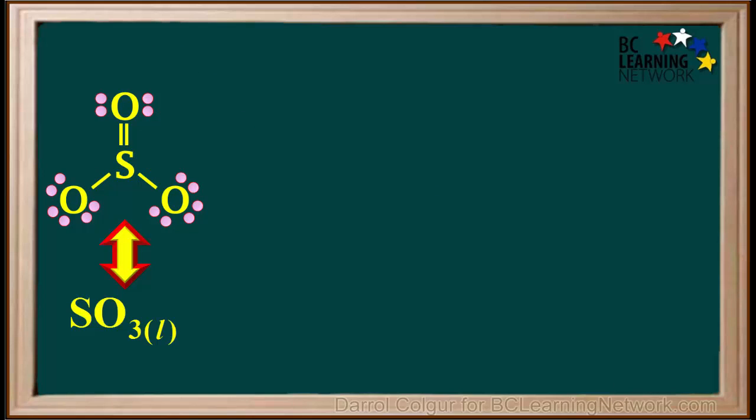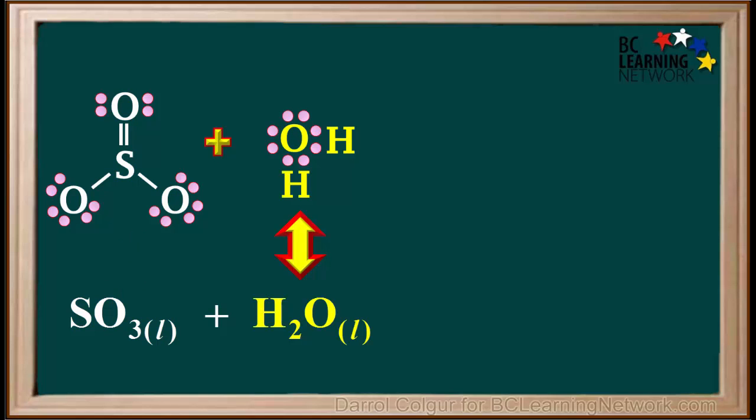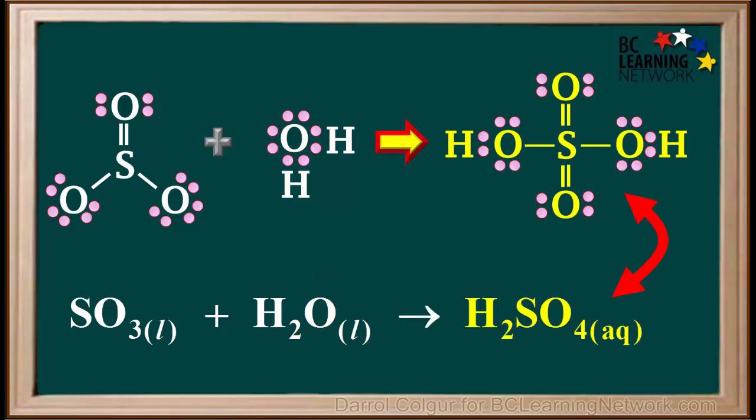At room temperature, SO3 is a liquid. When it dissolves in water, it reacts with water, and through a series of reactions, forms sulfuric acid, H2SO4. The Lewis structure for sulfuric acid is shown here.